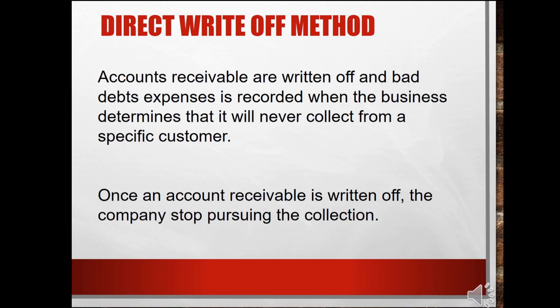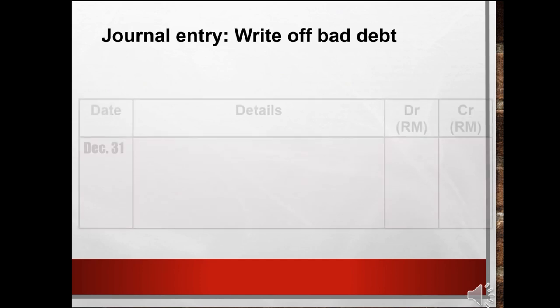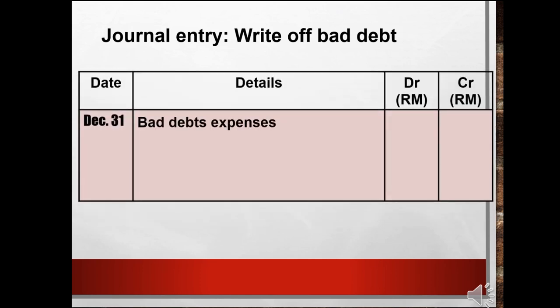Once an account receivable is written off, the company stops pursuing the collection. We record this in the journal entry: debit bad debt expenses, because it will increase the expenses in the company, and credit accounts receivable, because it will reduce the amount of receivable when we write off bad debts.